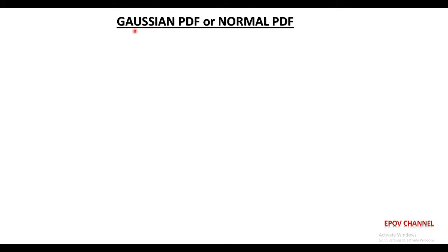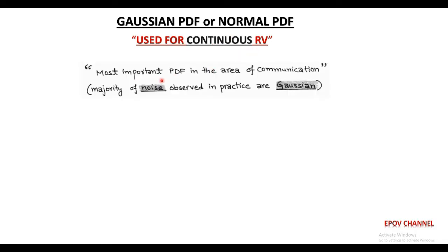Welcome once again. In this session, we are going to discuss a very important probability density function called the Gaussian or Normal PDF. This Gaussian PDF is basically used for statistical analysis of continuous random variables and plays an important role in the field of communication. Practically, in communication, the majority of noise observed is Gaussian in nature. Also, this noise is additive in nature, hence called additive Gaussian noise.